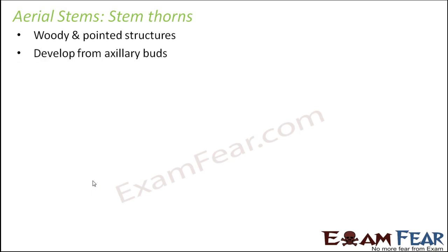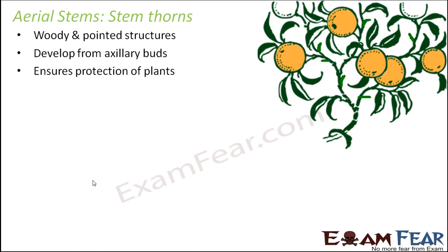Another modification of aerial stems is stem thorns, which relates to the defense mechanism of plants. Stems get modified into woody and pointed structures. This is commonly seen in citrus plants like oranges and lemons, where thorn-like structures are sharp enough to hurt if touched. You can also see spines or thorns in rose plants and cactus, though not all of these are stem modifications.